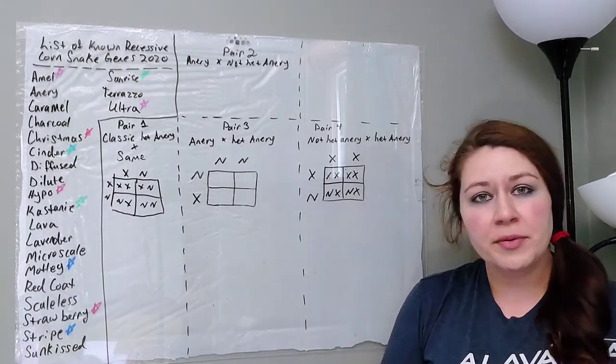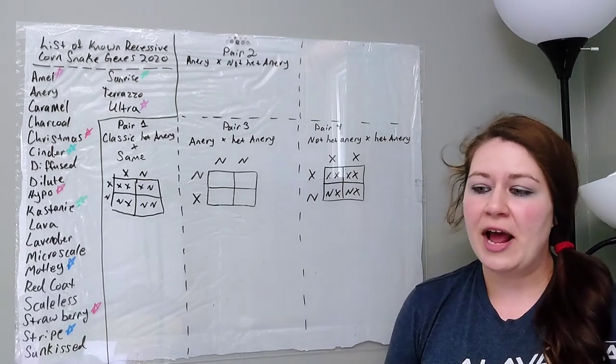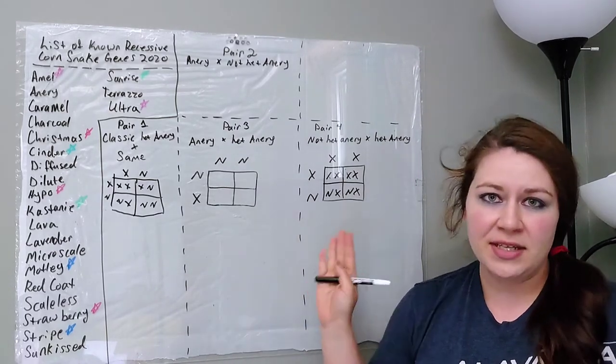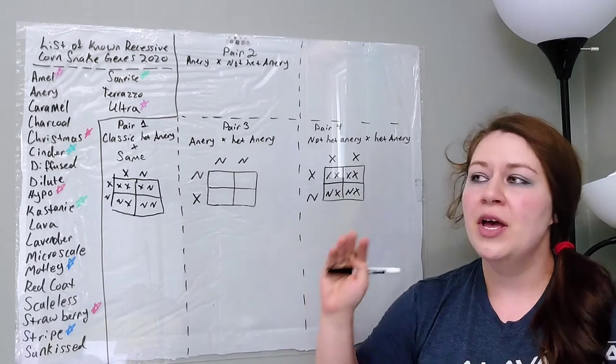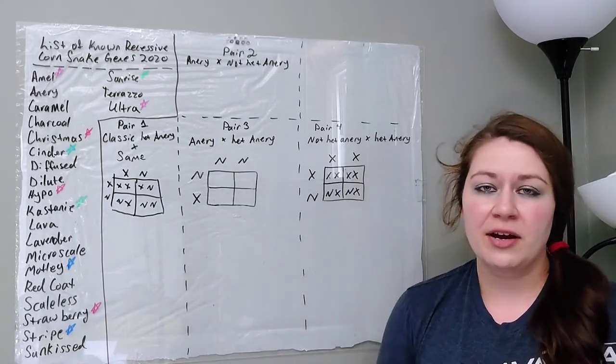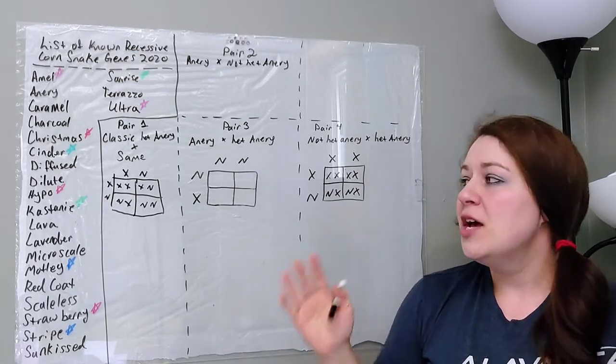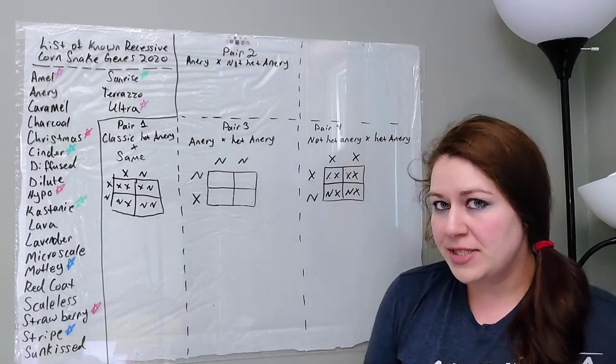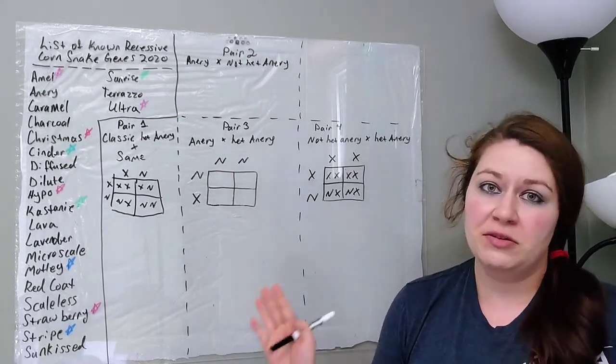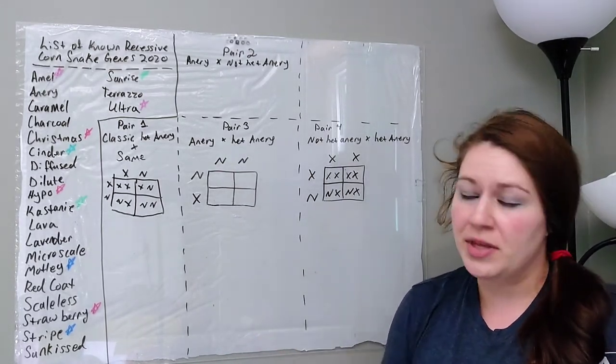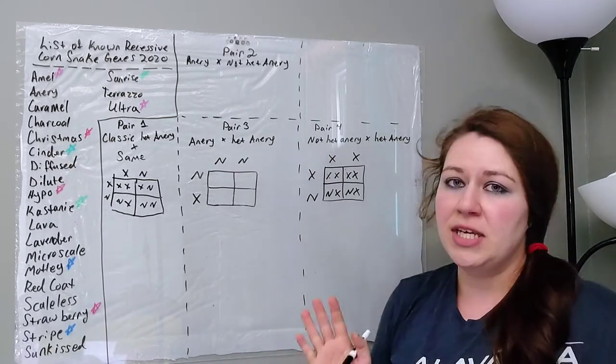So if you're not comfortable with Punnett squares yet, definitely check that out, and that will help you immensely not only understand this video, but in the future when you're trying to calculate recessive genes for yourself. The majority of corn snake genes are recessive, so this is the kind of information you definitely want to know and be comfortable with. So what a recessive gene is,